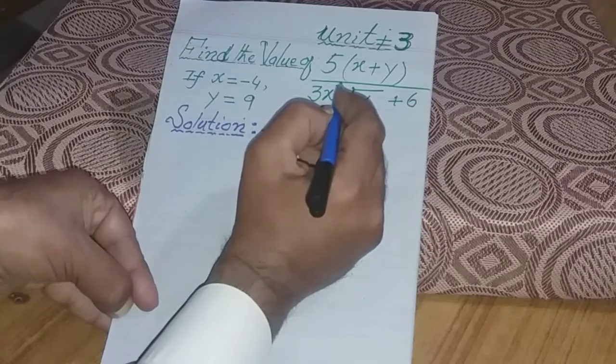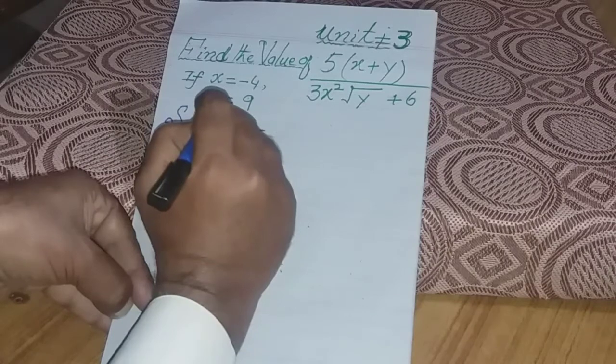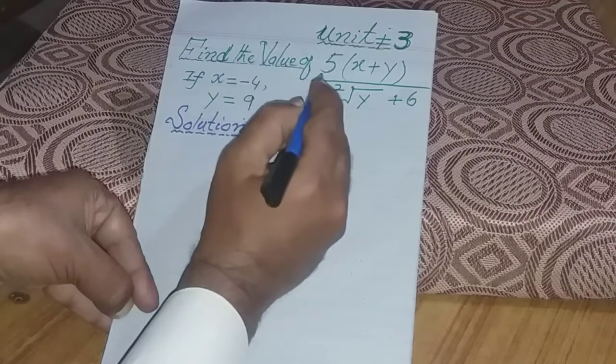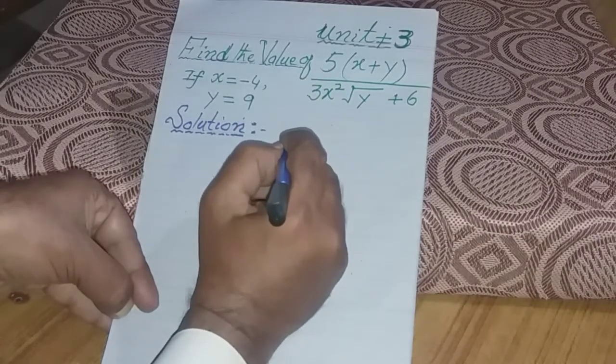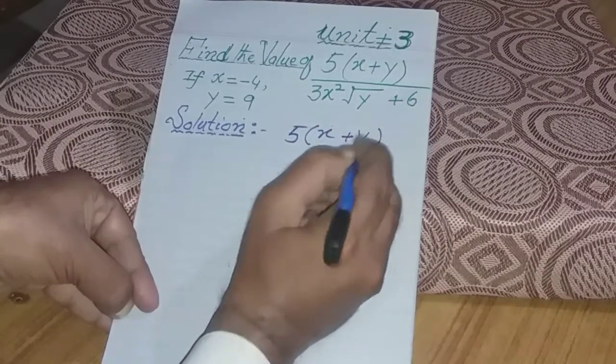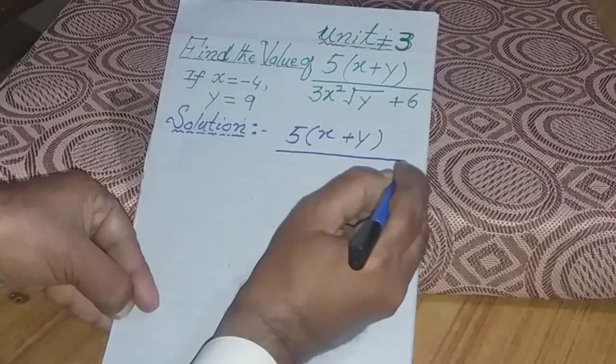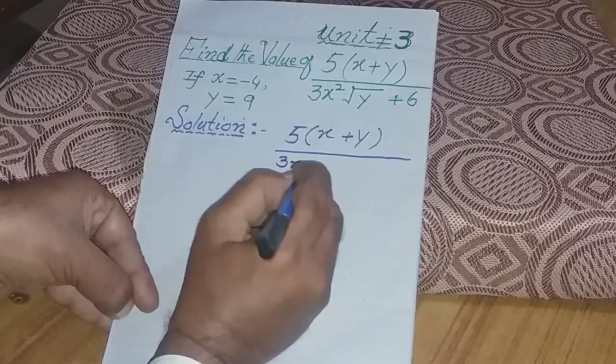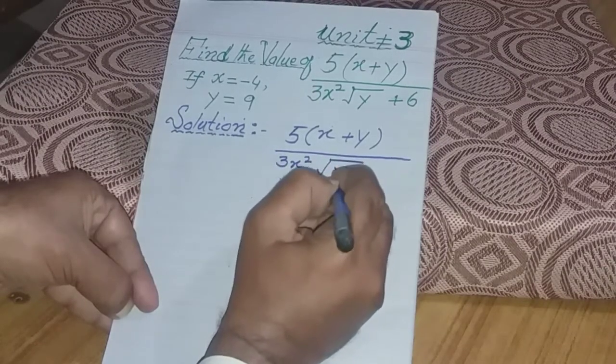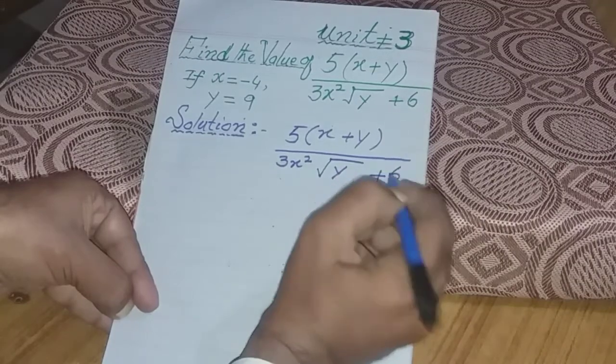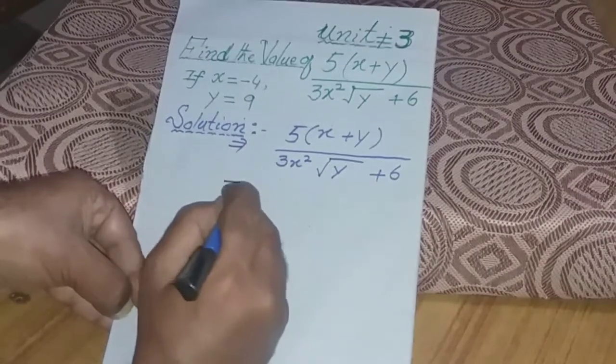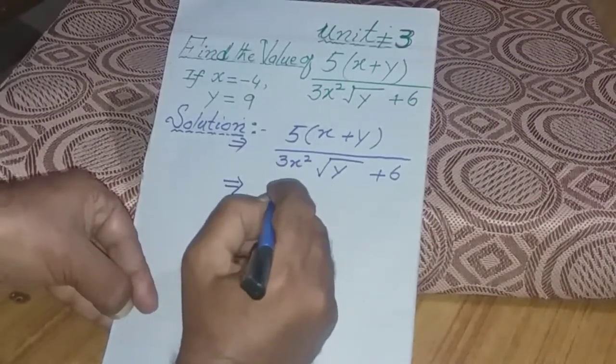Here the algebraic expression, we need to substitute the given values. Where we have x and y in the algebraic expression, we need to place the given numbers. 5 bracket x plus y bracket over upon 3x squared radical y plus 6. We need to substitute x and y with their given values.